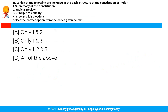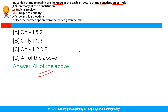The last question for this video is: which of the following are included in the basic structure of the Constitution of India? The options are: supremacy of the constitution, judicial review, principle of equality, and free and fair elections. The correct answer is option D — all of the above. The Supreme Court is yet to formally define what constitutes the basic structure of the constitution, but from various judgments, these features have emerged as basic features of the Constitution of India.